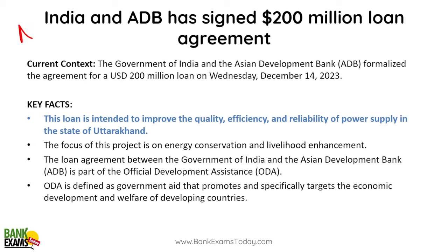India signed a 200 million dollar loan agreement with ADB, the Asian Development Bank, on 14th December. The loan is intended to improve the quality, efficiency, and reliability of power supply in the state of Uttarakhand. The focus of this project is on energy conservation and livelihood enhancement. Very important.